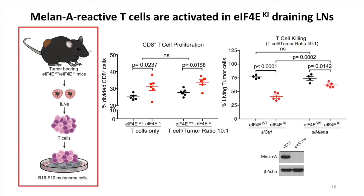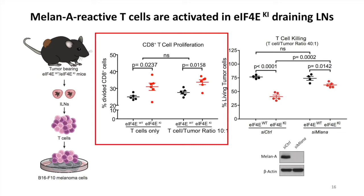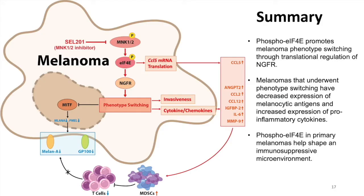Finally, we isolated T cells directly from the draining lymph nodes of wild-type versus knock-in tumor-bearing mice. Interestingly, with or without the presence of tumor cells, the T cells from the knock-in lymph nodes are more activated. They also show better tumor-killing ability, and such effect can be reduced when we knock down the melanoma antigen Melan-A from the tumor cells. This data suggested that a significant amount of T cells in the knock-in draining lymph nodes are reactive to Melan-A, which is not present in the de-differentiated wild-type tumors.